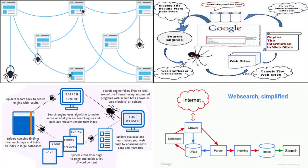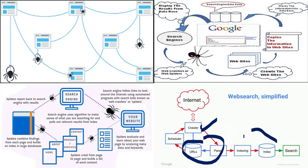To understand this properly: suppose you are uploading a page on the internet — first that page will be read by the crawlers, then that content will be stored in the computer's database. All these URLs and everything will be stored in the database. When a user performs any search, that data will be delivered to the user by these indexing softwares.